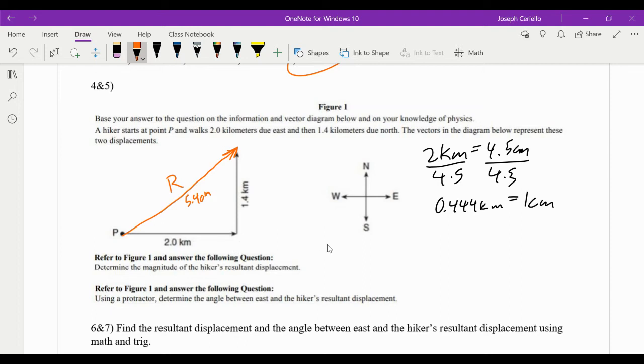Is that the magnitude of the hiker's displacement? No. The hiker is more than 5.4 centimeters from where he started. So what do you do? Well, you have to use your scale factor to bring it back. So we have 5.4 centimeters times 0.4 repeating kilometers over one centimeter. Centimeters cancel. 5.4 times 0.44444. We get pretty much exactly 2.4 kilometers. So that's the magnitude of our displacement. That is how far the hiker is from where he started.